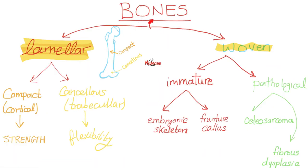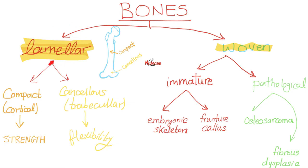There is another classification: lamellar bones and woven bones. As an adult, you have lamellar bone only — which can be compact or cancellous. Woven bone is found in the very young — immature or embryonic skeleton — or in disease states such as fracture callus, osteosarcoma, and fibrous dysplasia. Woven bone is not as good as lamellar bone.